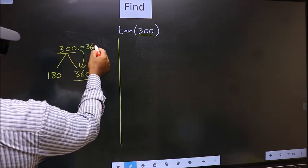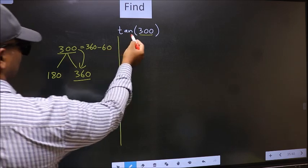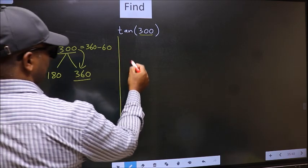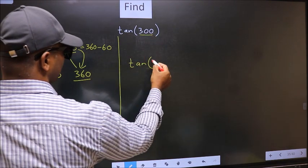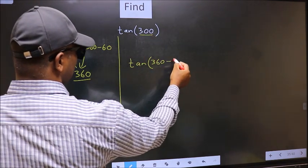Now we write 360 minus 60. So this will become tan. In place of this, we write 360 minus 60.